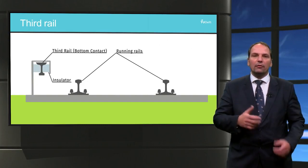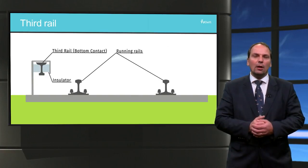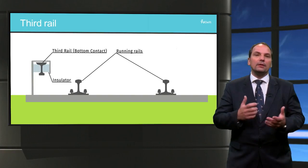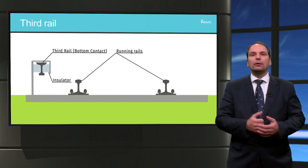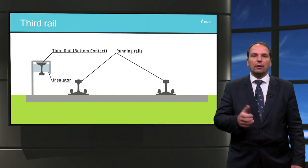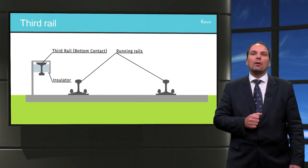The electrified rail threatens electrocution of anyone wandering or falling onto the tracks. This can be avoided by using platform screen doors, or the risk can be reduced by placing the conductor rail on the side of the track away from the platform when allowed by the station layout.